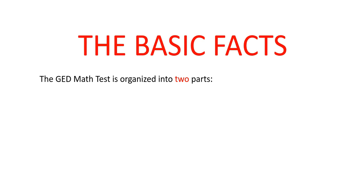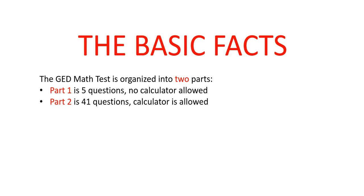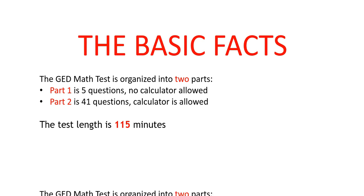The first thing you need to know is the test is organized in two parts. Part one is five questions and you cannot use a calculator. Part two is 41 questions and you can use a calculator. The test length itself is 115 minutes, so you get almost two hours to complete this test.